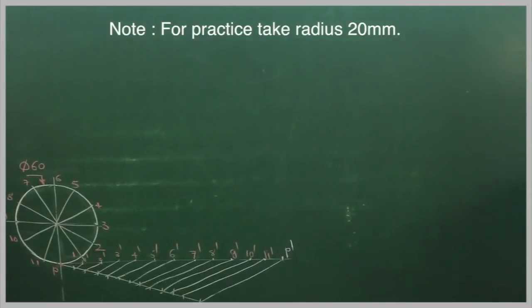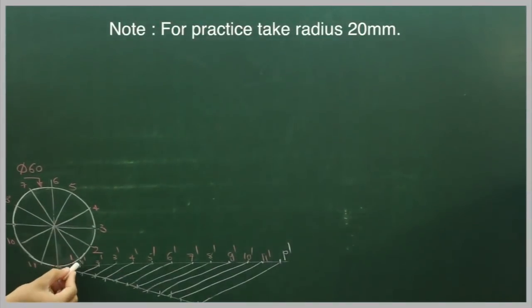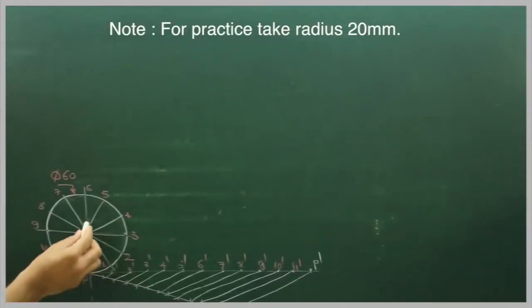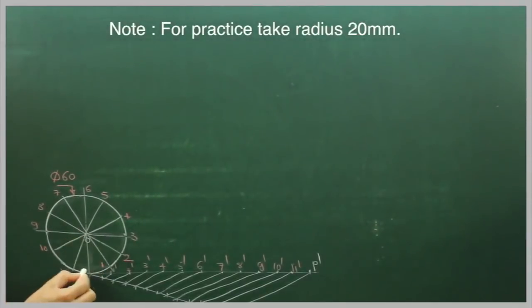After that, we draw tangent from all this point 1, 2, 3, 4. We have to draw tangent, right? How do we have tangent? O, P. Same way O, 1, we draw tangent too.